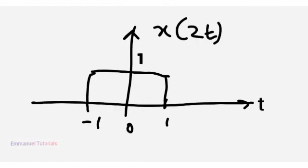So when you compress this signal by 2, the signal at minus 2 will appear at minus 2 by 2 and the signal at minus 1 will appear at minus 1 by 2 that is minus 0.5.